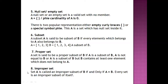Improper subset: a set A is called an improper subset of B if and only if A is equal to B. If A is a subset but A is equal to B — both sets are equal — then it will be called an improper subset.